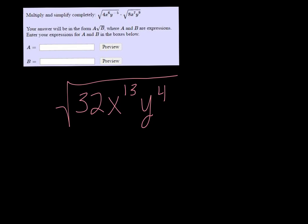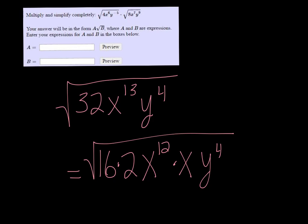All right, and then we've got to simplify this. We can break it down to 16 times 2 to get out a perfect square, and x to the 12th times x, and y to the 4th. And then we'll take out the perfect squares.